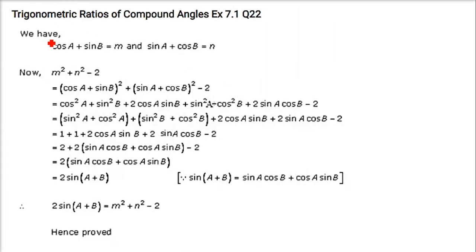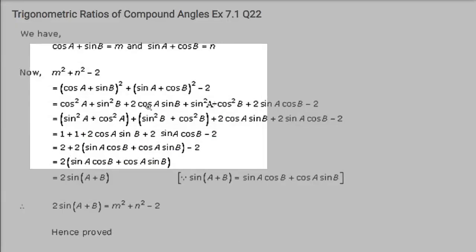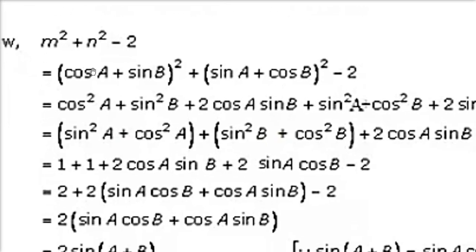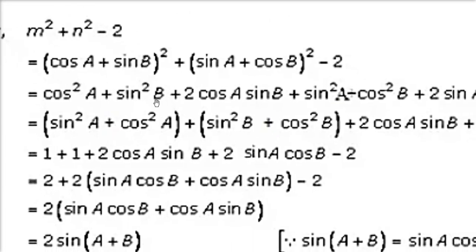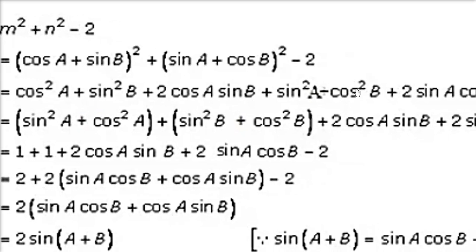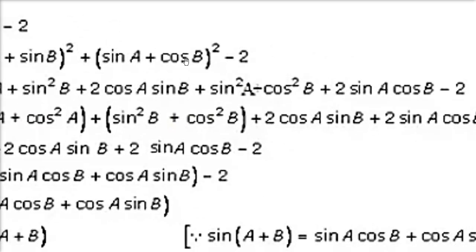Now, cos(a) + sin(b) = m and sin(a) + cos(b) = n. We have to prove that 2·sin(a + b) = m² + n² − 2. So we just expand it: m is this one, n is this one. Expand (a + b)² whole square: m² = cos²(a) + sin²(b) + 2·cos(a)·sin(b). Similarly n² = sin²(a) + cos²(b) + 2·sin(a)·cos(b).